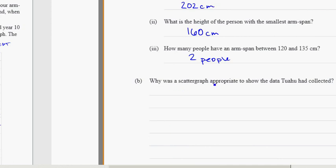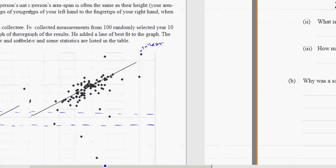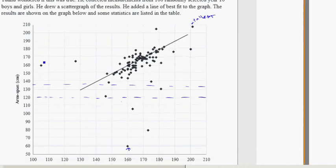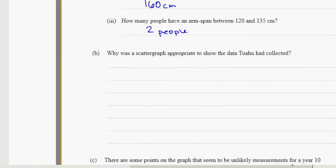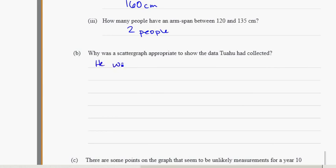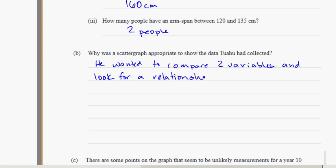Part B: why was the scatter graph appropriate to show the data he had collected? A couple of reasons for this. If you think about it, he's trying to make a comparison between two different variables, and the scatter graph shows those two variables so he's able to compare them well. He wanted to compare two variables and look for a relationship between them. Another word for relationship sometimes could be correlation.